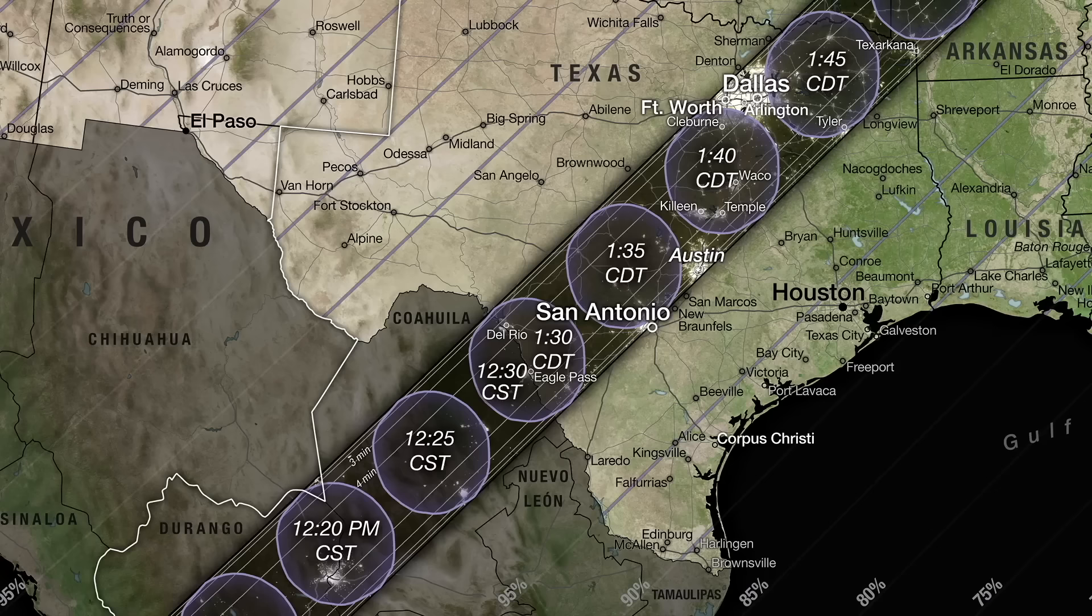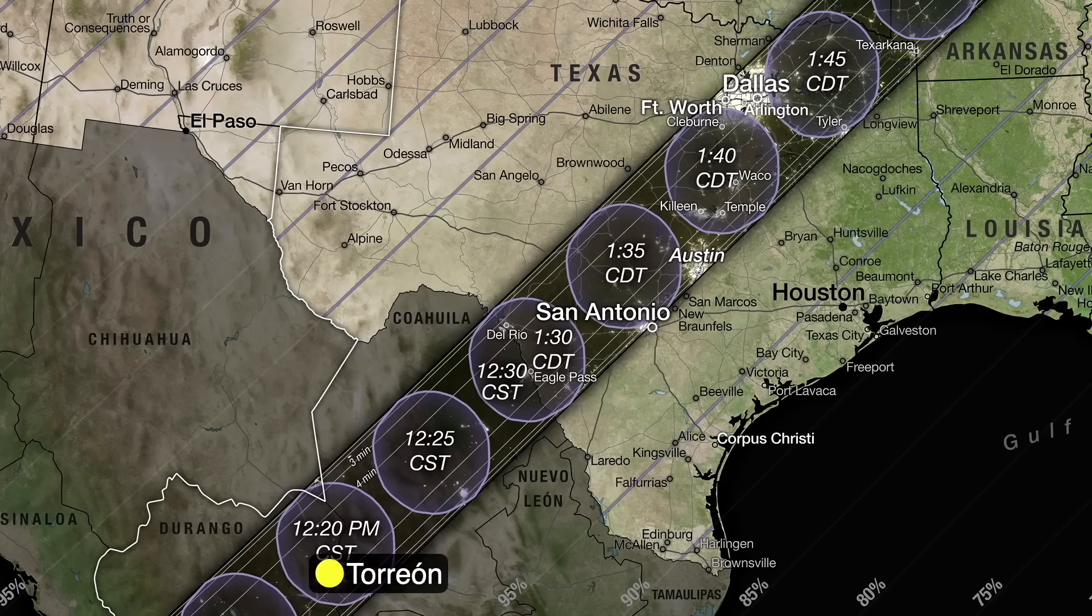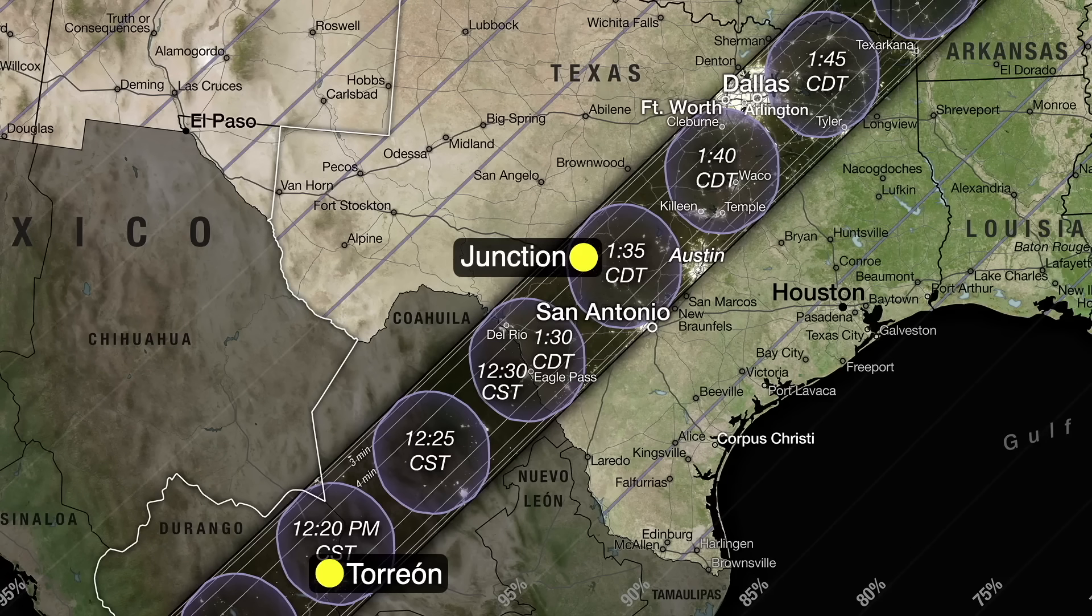We'll first see the eclipse in Torreon, Mexico, and then about 13 minutes later, our primary site in Junction, Texas will experience totality. So, during our webcast, you will hopefully experience two total eclipses.